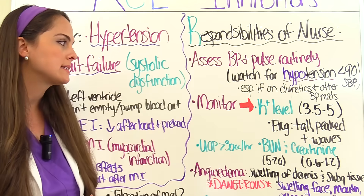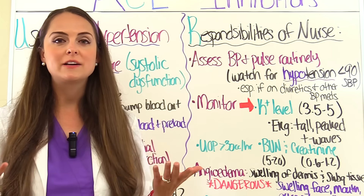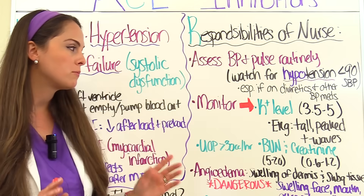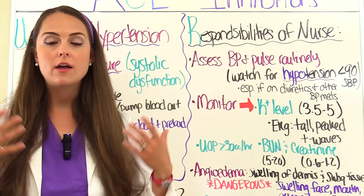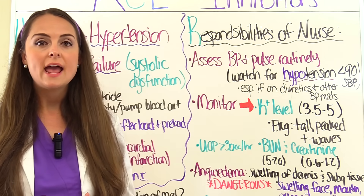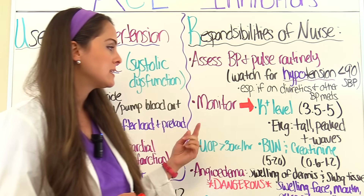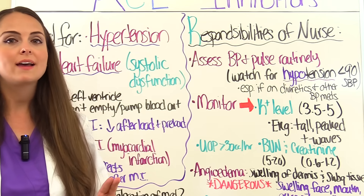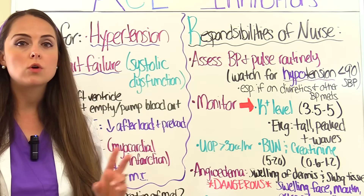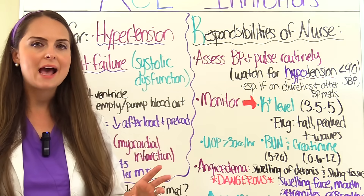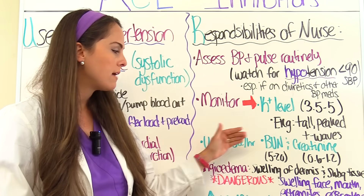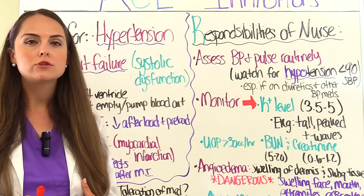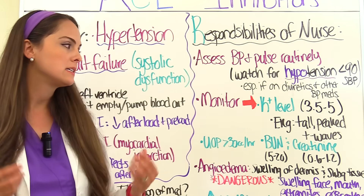You also want to monitor potassium levels to ensure the patient isn't experiencing hyperkalemia. A normal potassium is 3.5 to 5. If the patient is on EKG monitoring, a sign of hyperkalemia is tall peaked T waves. Monitor renal function as well — BUN and creatinine — since this drug can alter how the kidneys work. A normal BUN is about 5 to 20, and a normal creatinine is 0.6 to 1.2. Also monitor urinary output; we want at least 30 cc per hour in an adult.